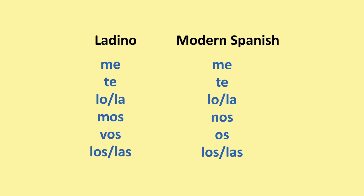Direct object pronouns are very similar to modern Spanish. In Ladino: me, te, lo, la, mos, vos, los, las. In modern Spanish: me, te, lo, la, nos, os, los, las.